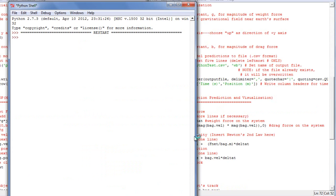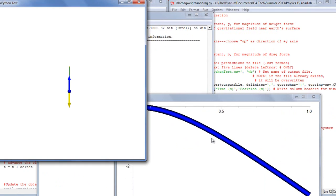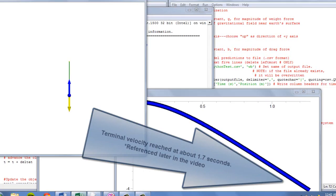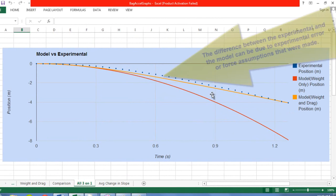As you can see, when accounting for drag force, the model does a better job of predicting the motion of the bag. In the graph, the model of the weight and the drag force is much closer to the experimental position of the bag.